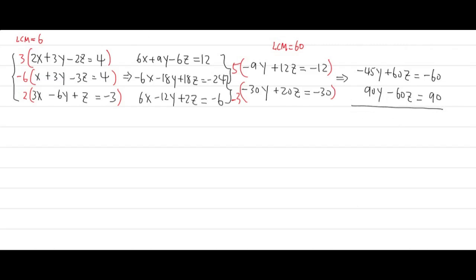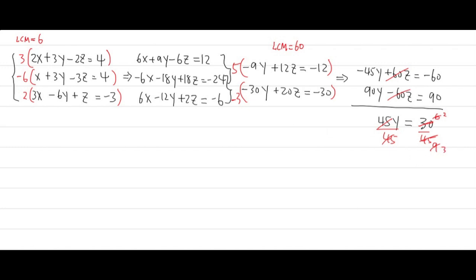Combining these two equations, the z's cancel. We get negative 45y plus 90y equals positive 45y, and that equals negative 60 plus 90, which is 30. Dividing both sides by 45, we get 30 over 45. Reducing: divide by 5 to get 6 over 9, then divide by 3 to get 2 over 3. So y equals 2/3.